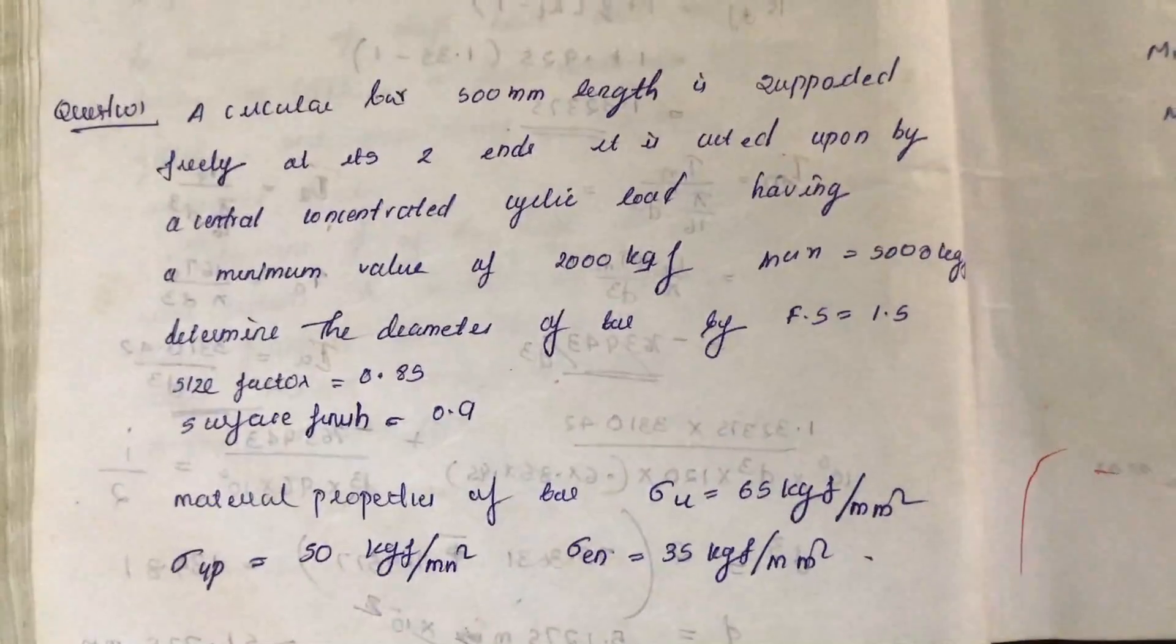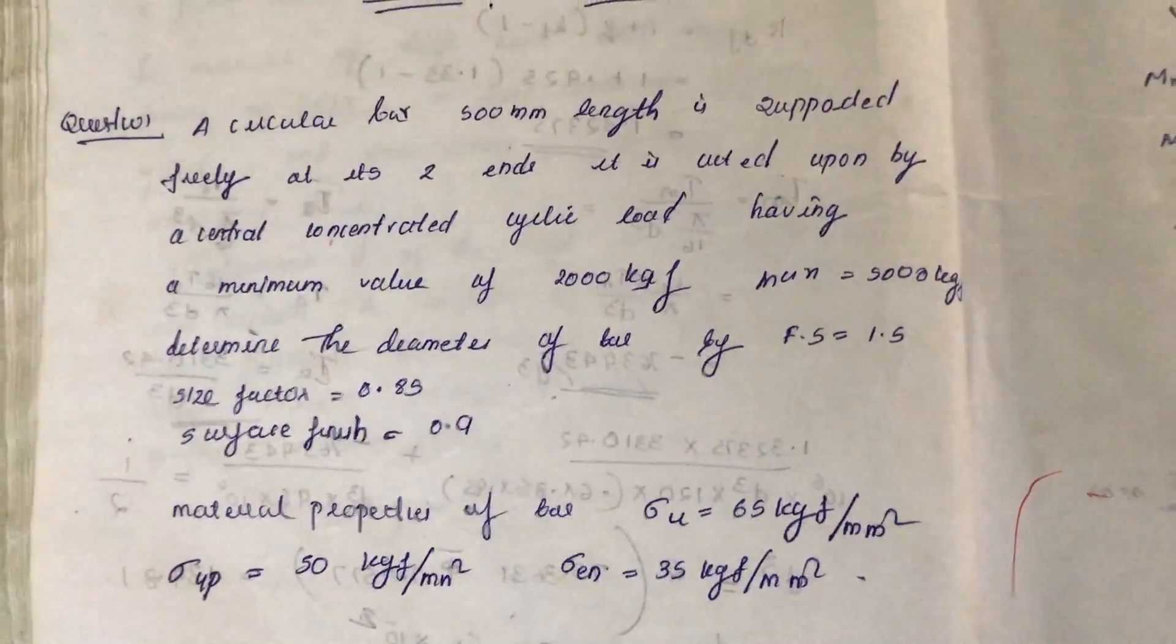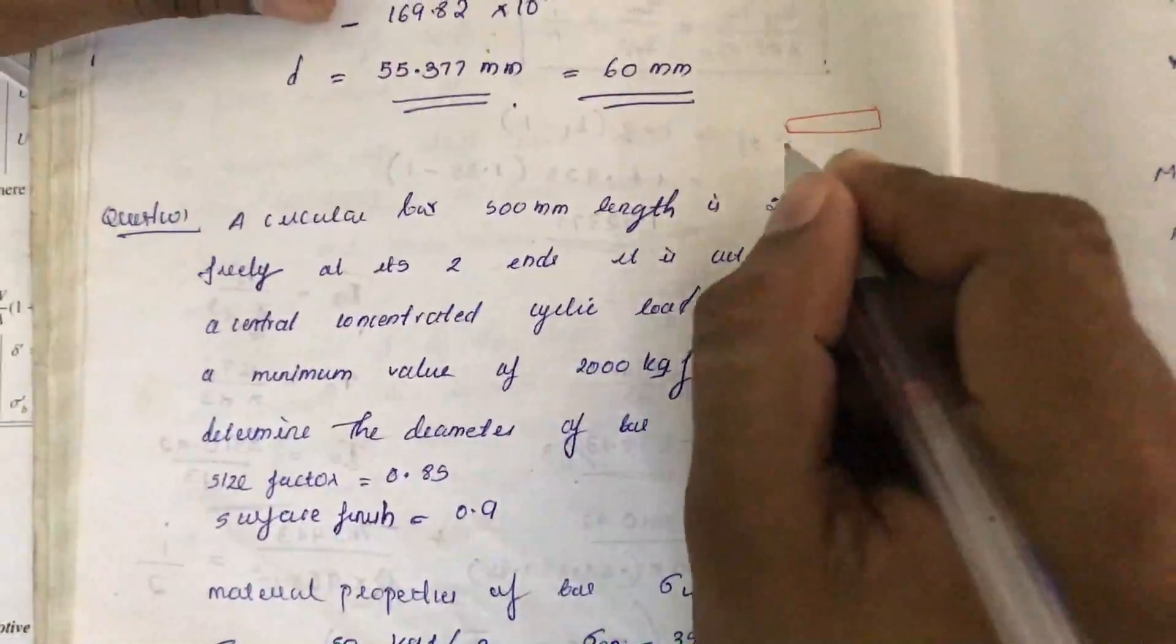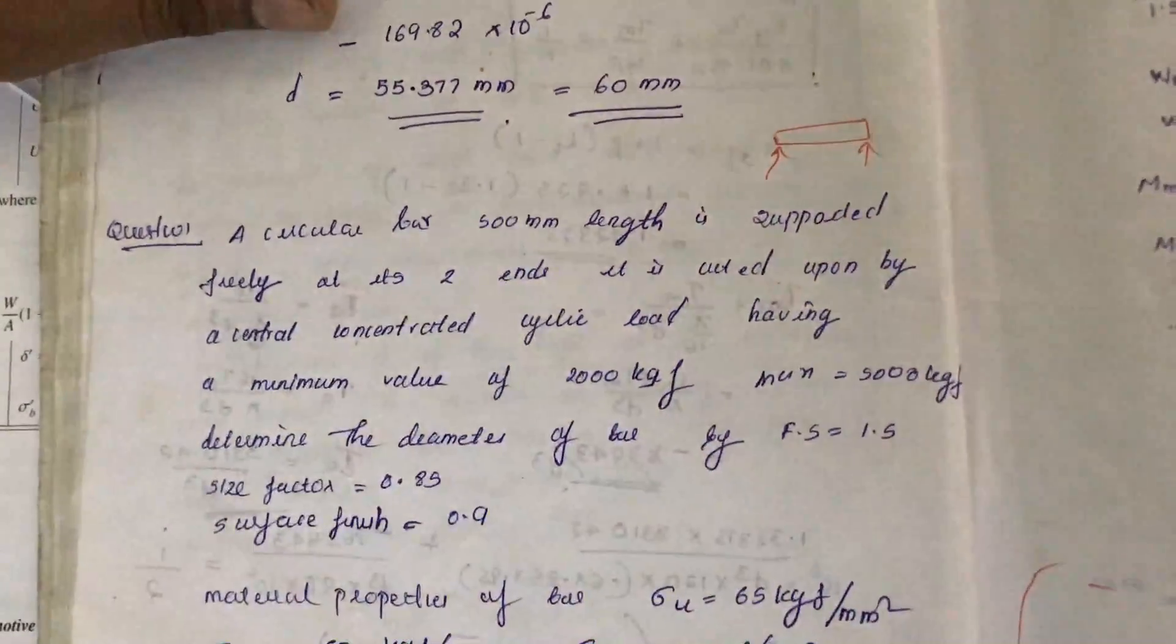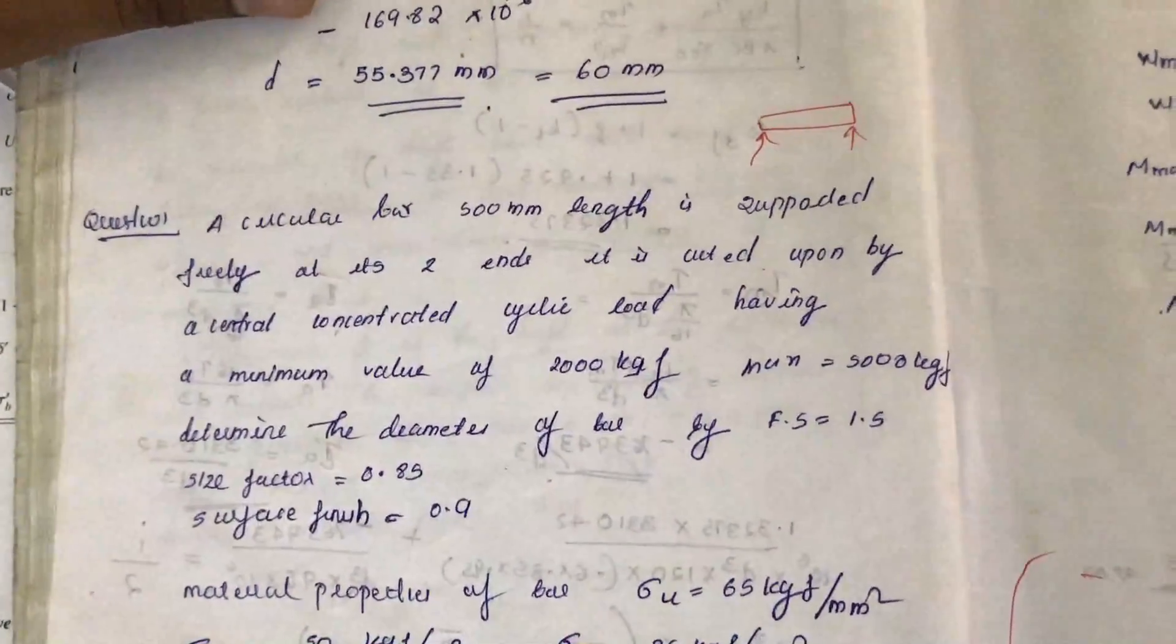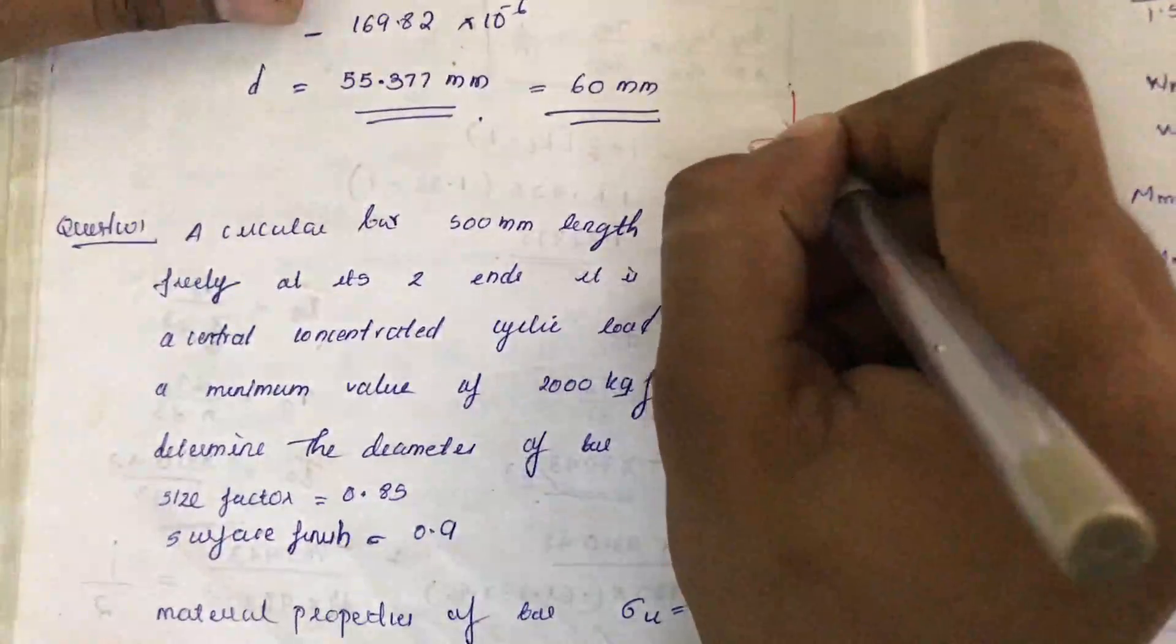A circular bar of 500mm length is supported freely at its two ends. The bar is acted upon by a central concentrated cyclic load.